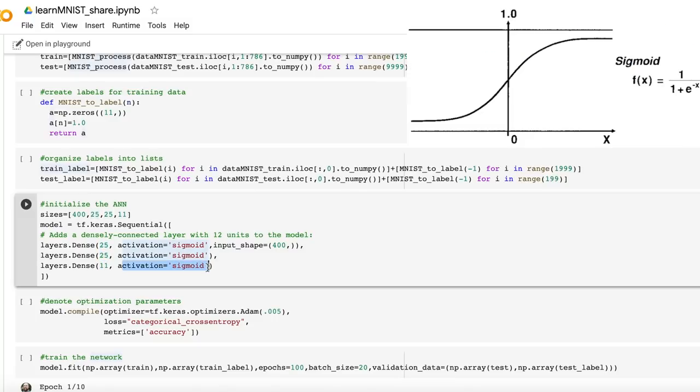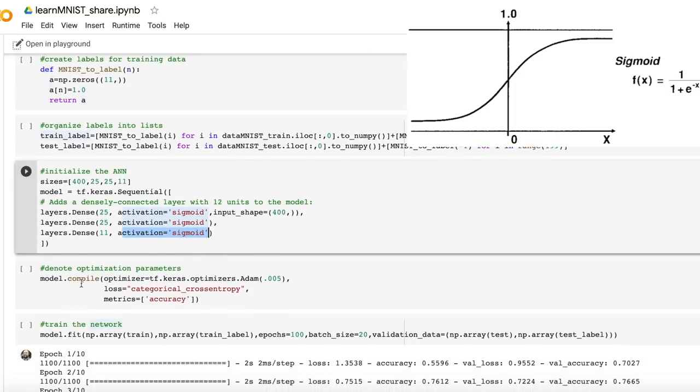Our activation function is a sigmoid shape, so our neurons are not binary. They can not just have zero or one inside them. They can have anything in between that.